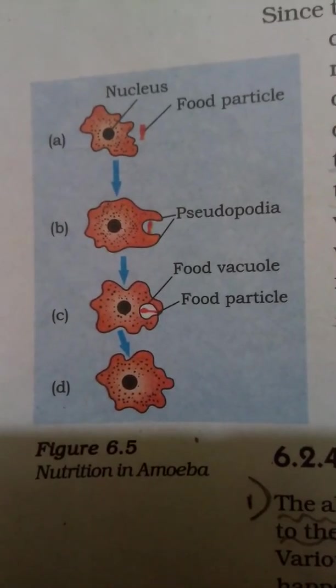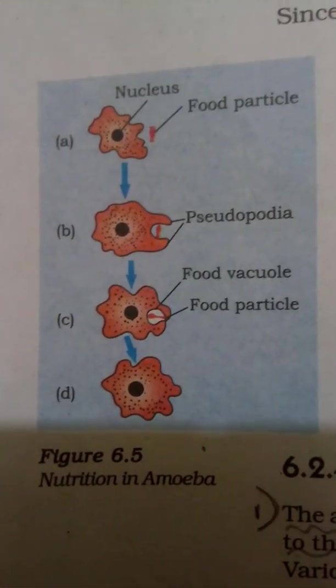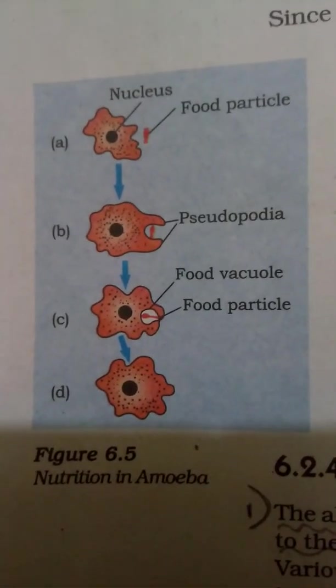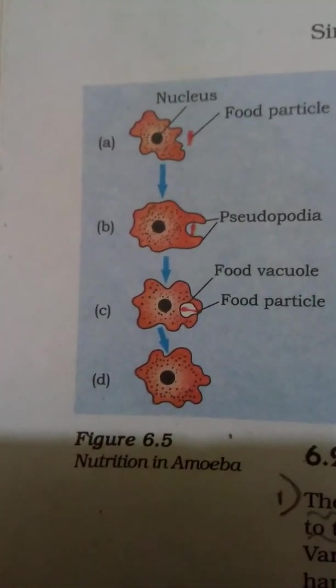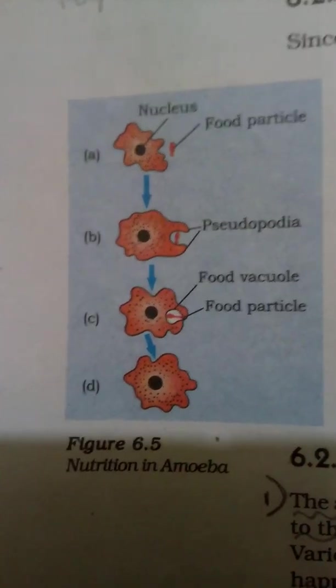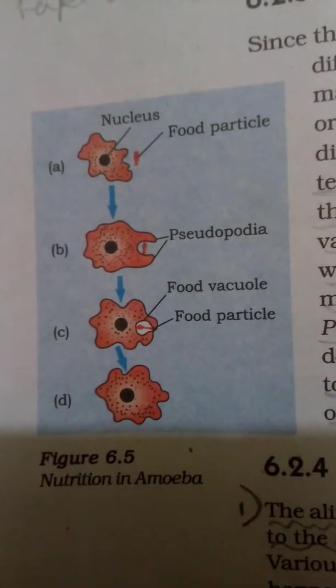Let's look at the diagram very quickly. Amoeba has a nucleus. You will see that it has its false finger-like projections which are extended. After that, the food vacuole is formed. Finally, the food is engulfed.